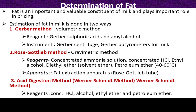The second method for fat determination is the Ross-Gottlieb method, a gravimetric method. Reagents used are concentrated ammonia solution, concentrated HCl, ethyl alcohol, diethyl ether, and petroleum ether.